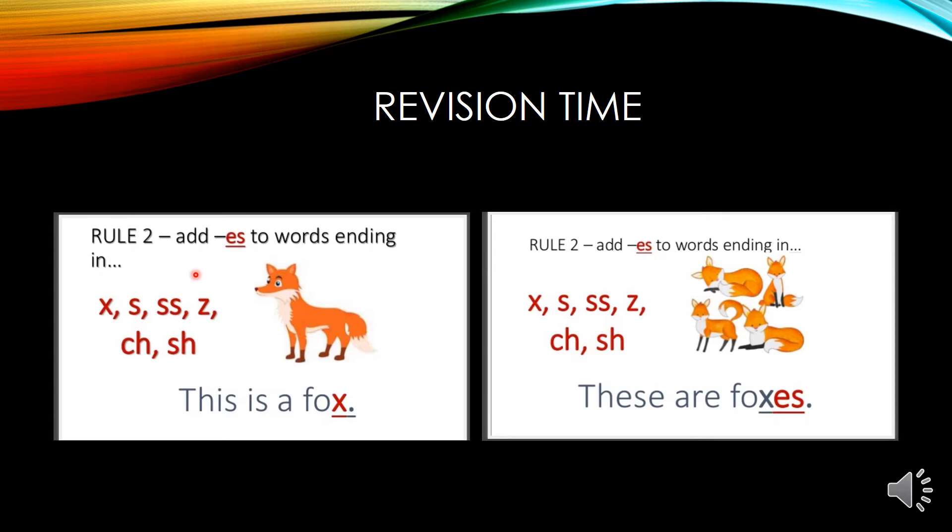Rule number one was adding -s to naming words to show many. Rule number two is adding -es to words ending in x, s, double s, z, ch, and sh. So come, let's have a quick revision about all -es words now.